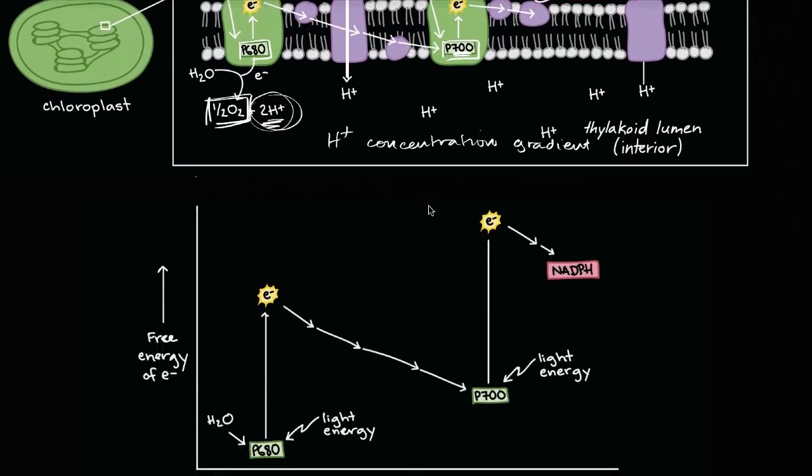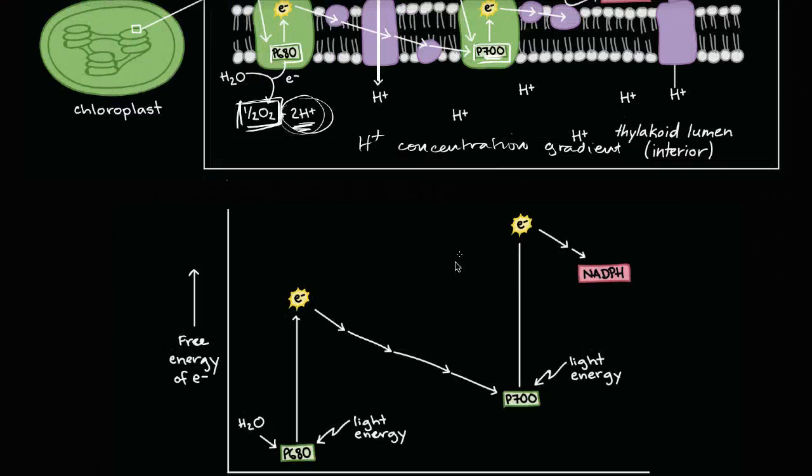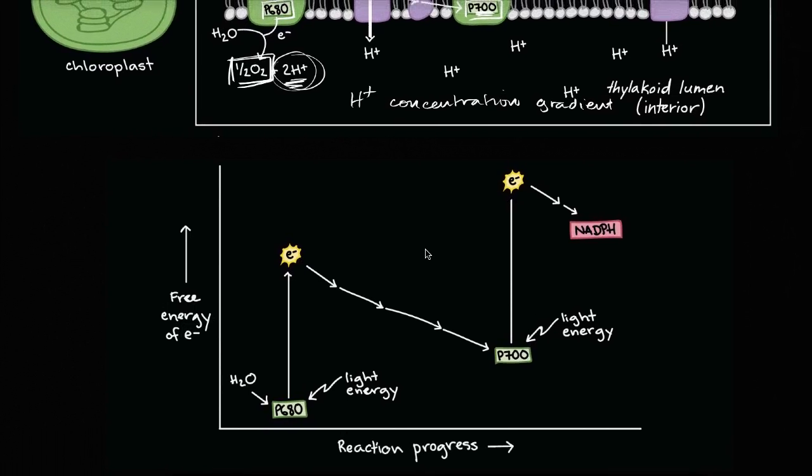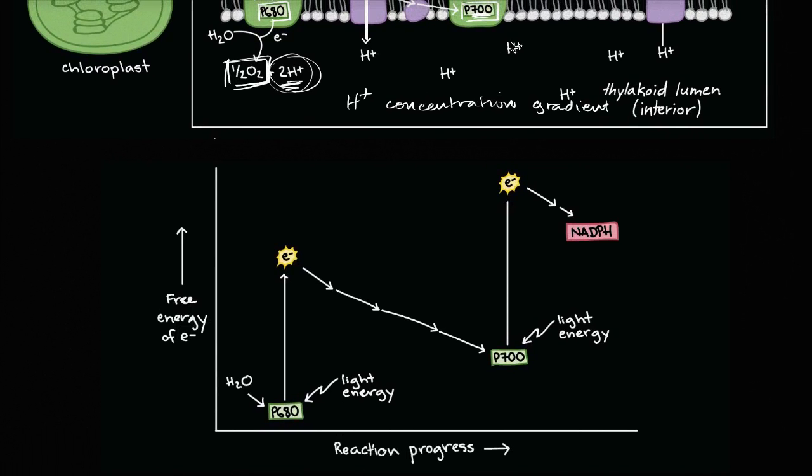And if you wanted to see that same idea, but kind of just thinking from an energetic point of view without all the complexity of seeing the physical components involved, you see it right over here, where you have light energy comes, excites the electrons. Once the P680 has given that electron away, it wants an electron really badly. It gets it from the water. And then as that electron goes to lower and lower energy states, it can eventually be grabbed by P700 that has given away its electron.